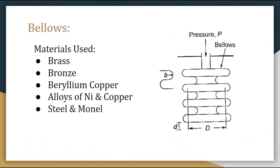The next element is bellows. The materials used for bellows are brass, bronze, beryllium copper, alloys of nickel and copper, steel, and monel, etc. As you can see in this diagram, bellows is basically a series of circular parts resembling the folds in an accordion. These parts are formed or joined such that they are expanded or contracted axially by change in pressure. Change of pressure leads to the expansion and contraction of the bellows element.